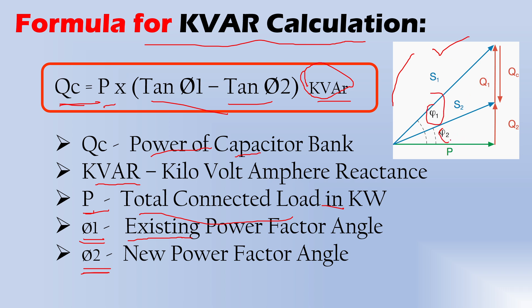From the diagram you can easily understand φ1 and φ2. Your power factor angle φ1 is larger, and you need to bring it down to φ2. To do this, you add a value QC — the capacitor bank. If you add a capacitor bank, this angle comes down, meaning your power factor is improved.